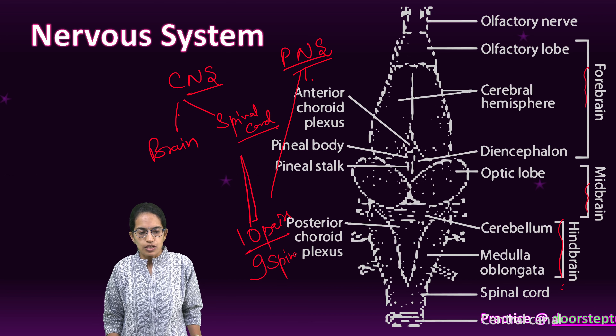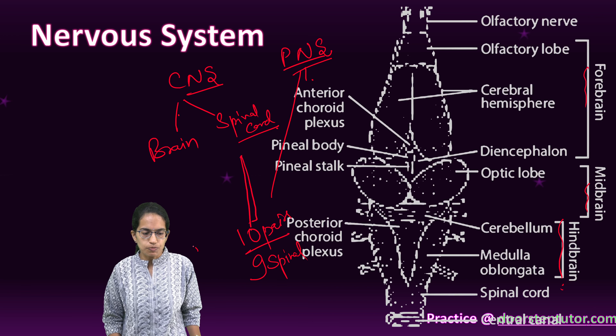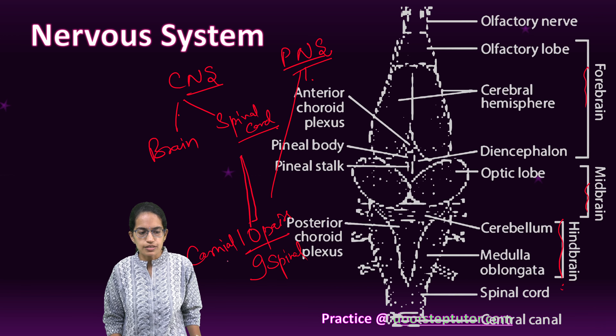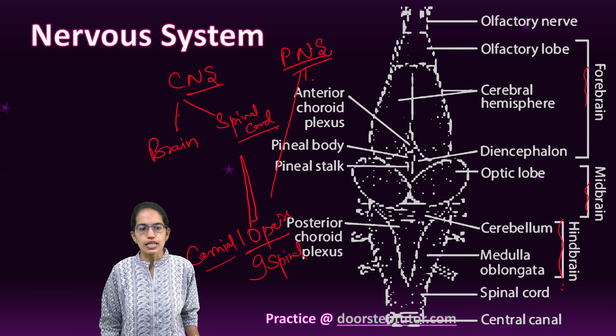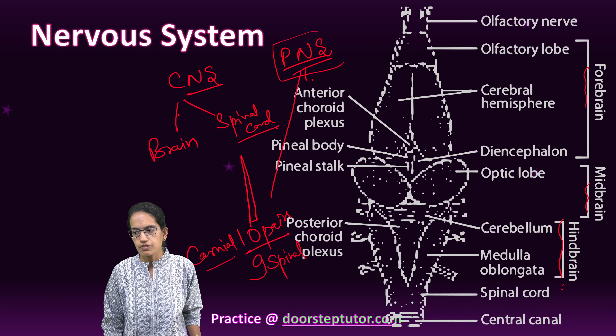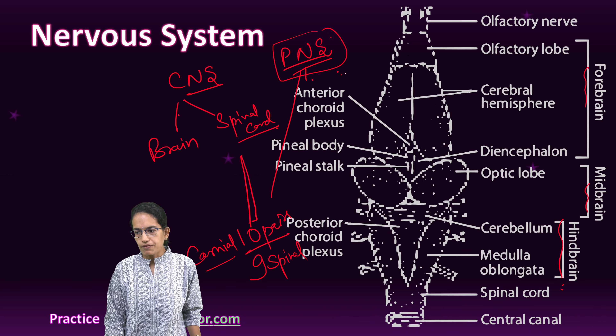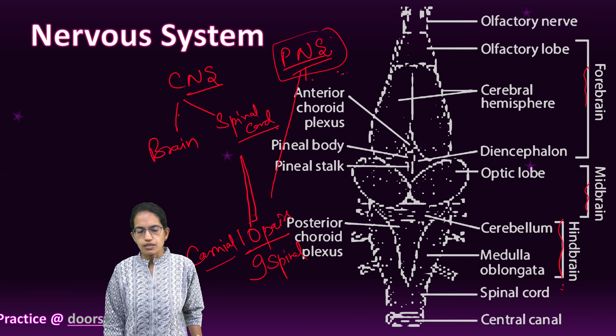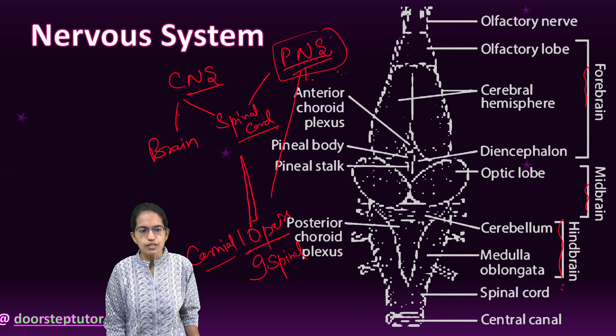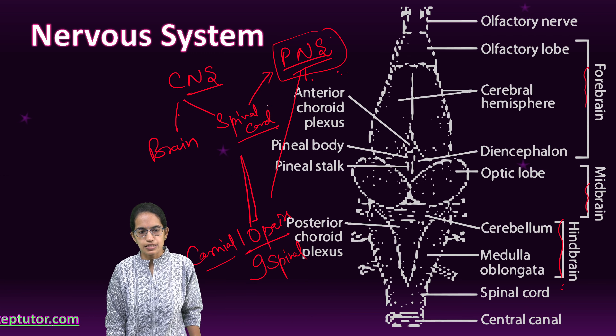Of these pairs, there are 10 pairs of cranial nerves and 9 pairs of spinal nerves present in the peripheral nervous system.